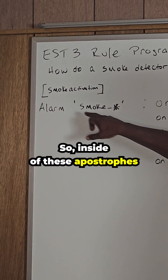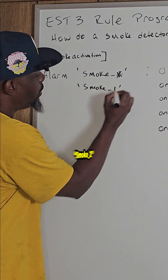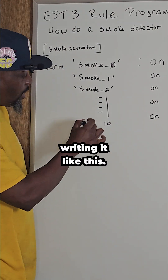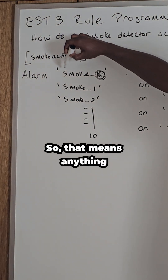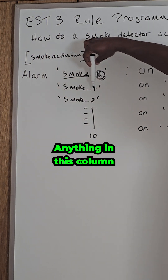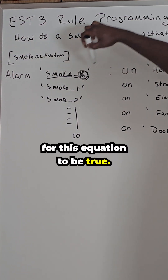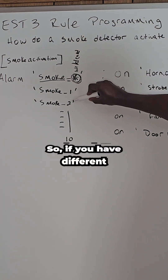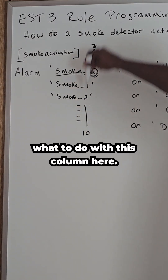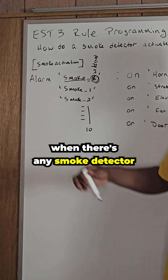Inside of these apostrophes, I have 'smoke_*' — the asterisk is a wildcard. So instead of writing smoke_1, smoke_2, all the way down to smoke_10, we put the wildcard. Anything that has the word 'smoke' will be recognized, anything with the underscore will be recognized, and anything in the number column will be recognized by the wildcard. So it has to say 'smoke' and have an underscore — and the wildcard handles whatever characters come after. This input equation now goes true when any smoke detector senses smoke.